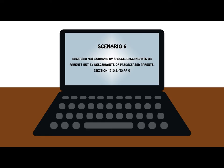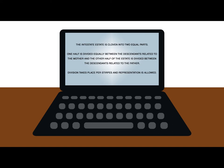In scenario 6, we look at a situation where the deceased is not survived by a spouse, descendants, or parents, but is survived by descendants of the pre-deceased parents. The estate is divided into two equal halves, with each share going to the side of one of the deceased parents. One half goes to the descendants of the deceased father by representation per stirpes, and the other half goes to the descendants of the deceased mother by representation per stirpes. Full brothers and sisters of the deceased will share from both halves. Half-brothers and sisters will take a share from the half of the estate through the parent that they are related to.